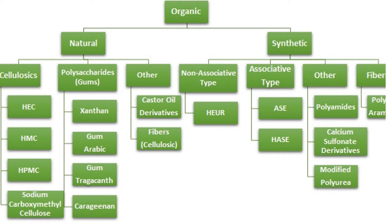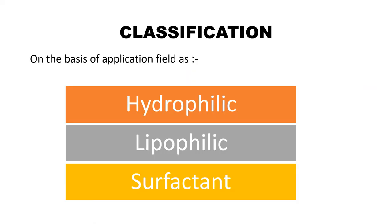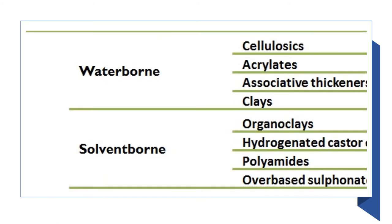Apart from the natural category, thickeners are also largely synthesized in the lab — for example, polyamides, calcium sulfonate derivatives, modified urea, and other fibrous substances. The classification can also be on the basis of properties such as hydrophilic, lipophilic, and surfactants — where hydrophilic means water-loving and lipophilic means lipid-loving. For water-based and solvent-based systems, thickening agents include cellulosic derivatives, acrylates, and associative thickening agents, with acrylates having water-bond features.